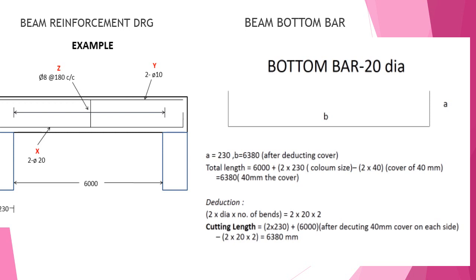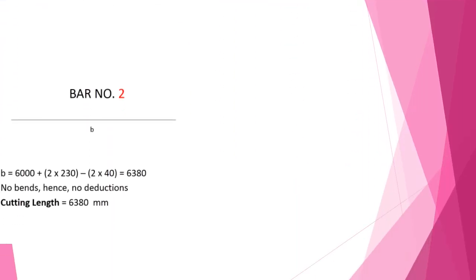For the top bar, the length will be 6000 mm. Add two column sizes (460 mm) and deduct the cover of 2 × 40 mm. So the total will be 6380 mm. As there is no bend, there is no deduction. Cutting length will be 6380 mm only.